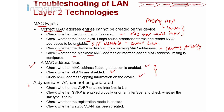Finally, check if dynamic VLAN cannot be generated. Verify that GVRP is enabled on the interface — the command is GVRP on the system as well as on the trunk port. Check whether GVRP is enabled globally and on the interface, whether the trunk is enabled, and whether the registration mode is correct. The registration modes are normal, forbidden, and fixed — make sure it is set to normal. Also check whether the static VLAN has been created.